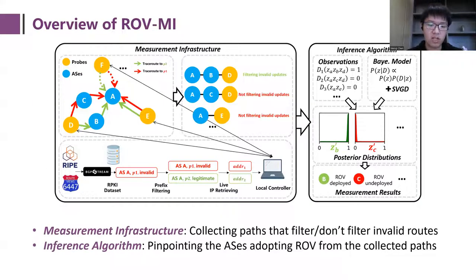In face of these two challenges, we propose our model ROV-MI for large-scale, accurate, and efficient measurement of ROV deployment. Our model mainly contains two parts. First, in the measurement infrastructure, we collect the paths that filter and don't filter the invalid routes. And then in the inference algorithm, we pinpoint the ASes that adopt ROV from the collected paths.